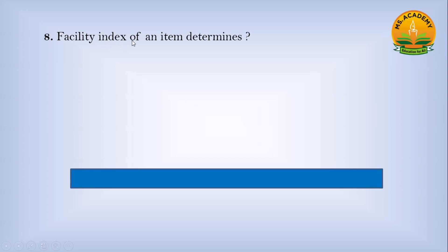Facility Index of an item determines: Option a) Discrimination Power, Option b) Ease of Difficulty, Option c) Reliability. Answer: b - Ease of Difficulty.